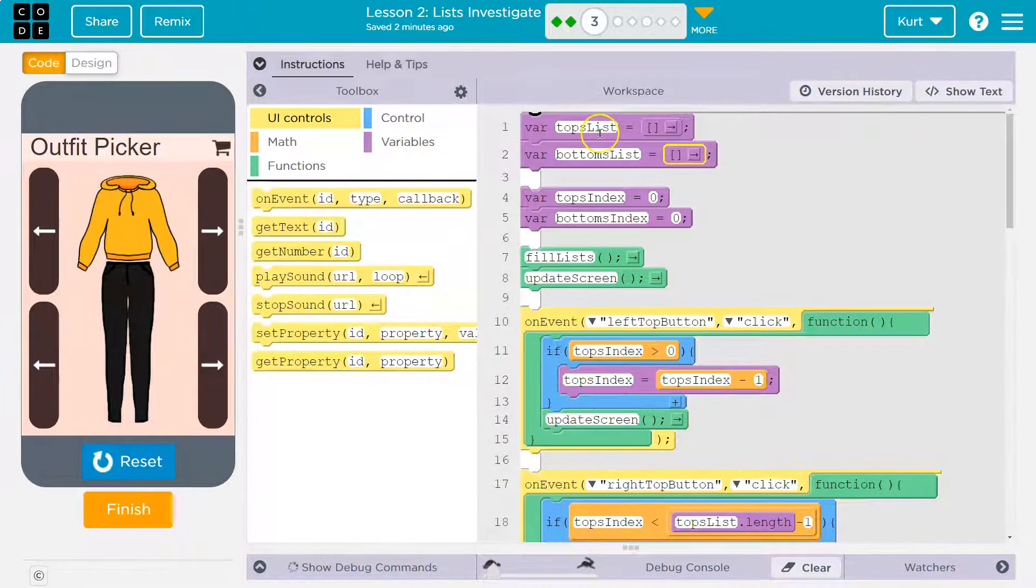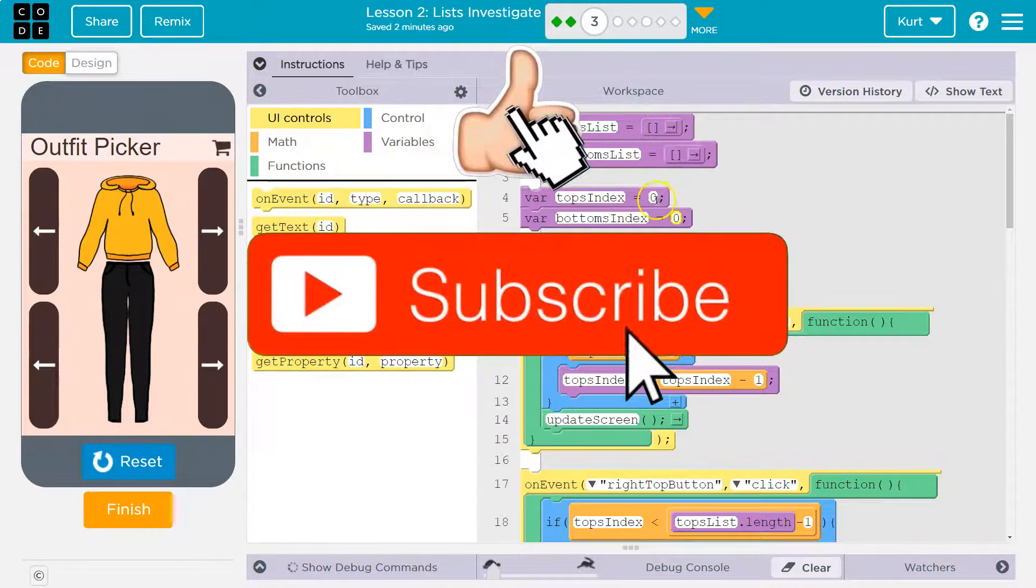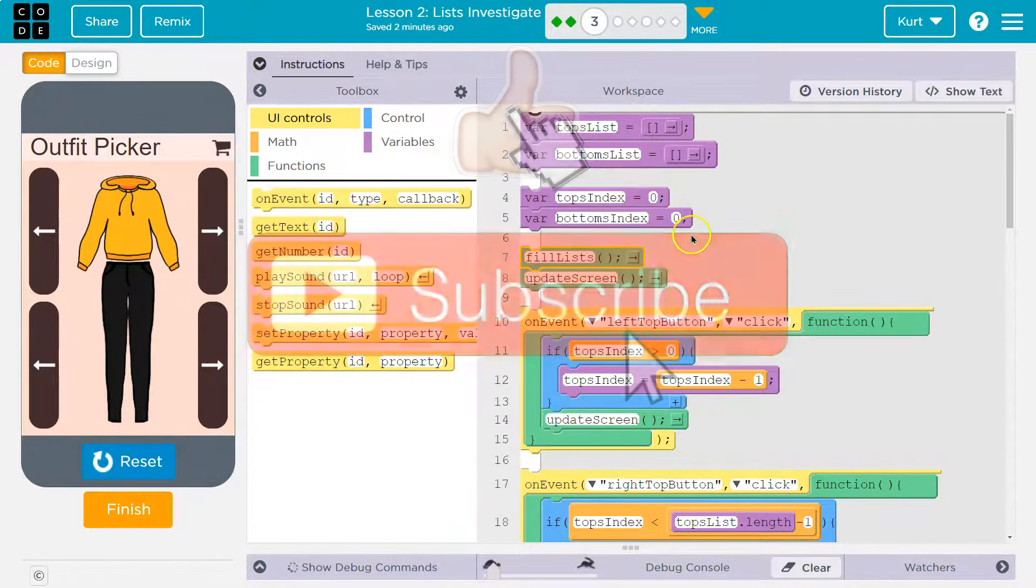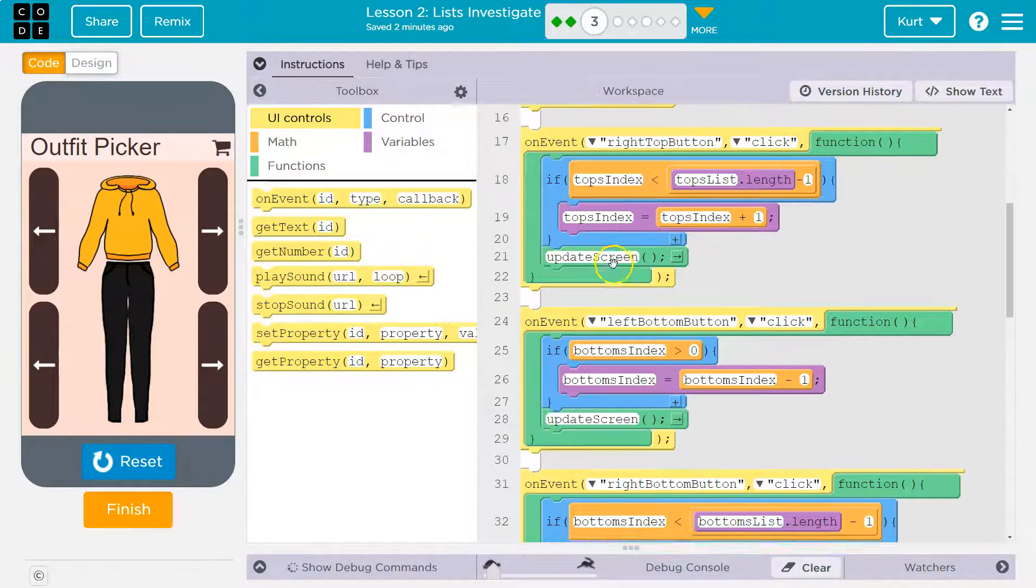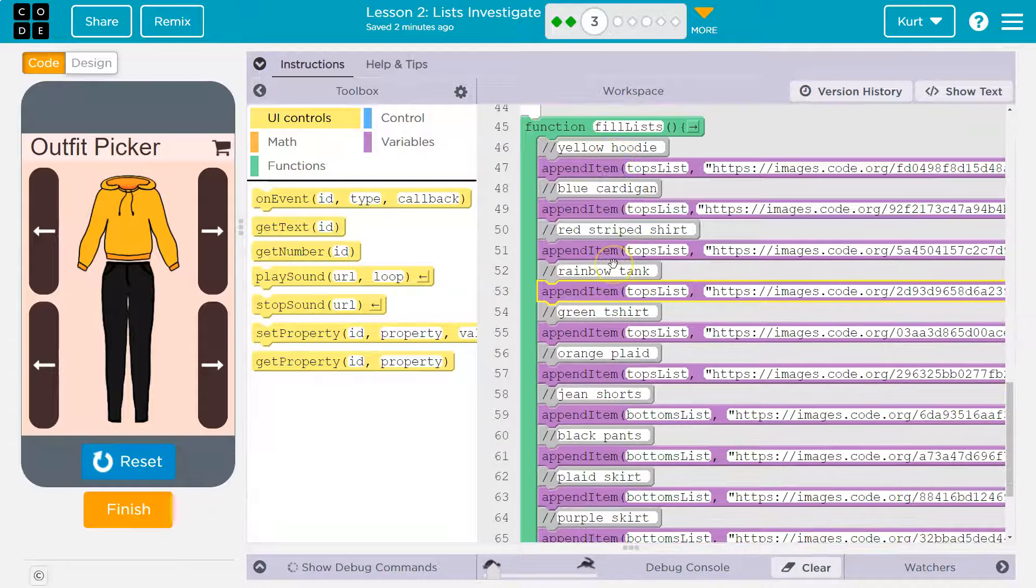All right, so we make a top list variable and it's an empty list. We make top index zero, bottoms index. So now, oh, it's not going to run because we haven't done anything.